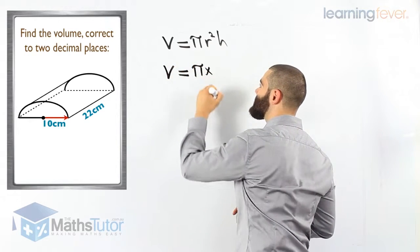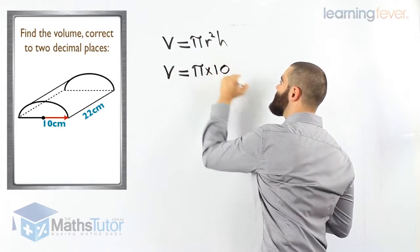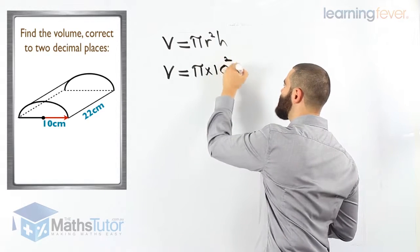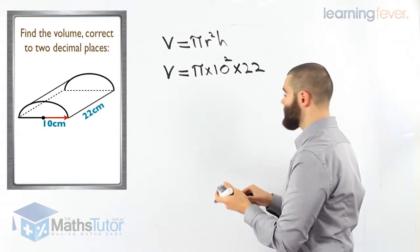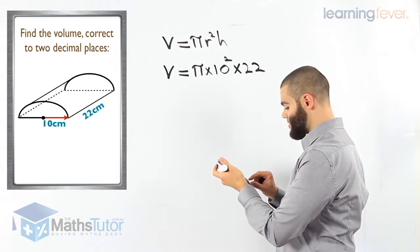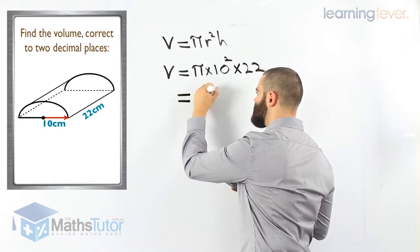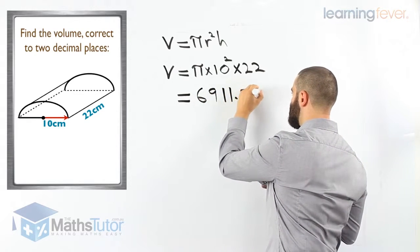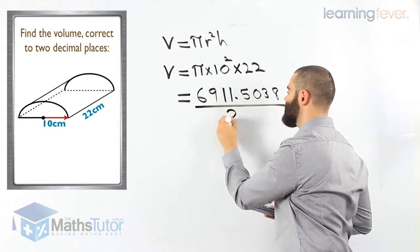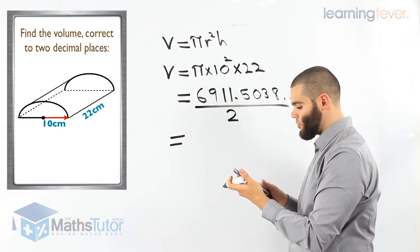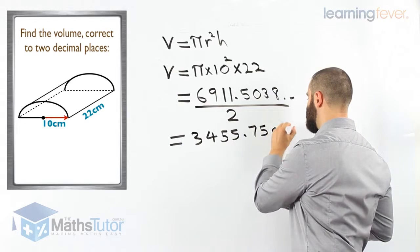V equals pi times the radius. The radius is 10 centimetres, marked with a red arrow. So V equals pi times 10 squared times the height, which is 22 centimetres. That gives us the volume for a full cylinder. Pi times 10 squared times 22 equals 6,911.5038, and it continues on. We are now going to divide by two because we are looking for half a cylinder.